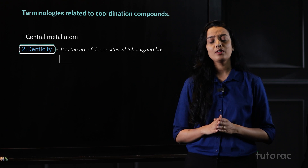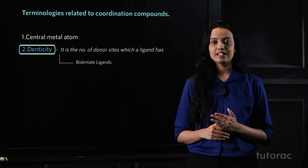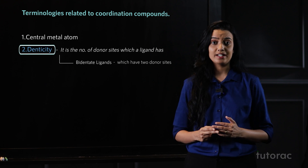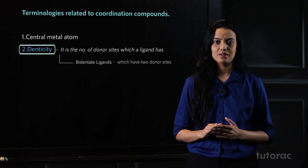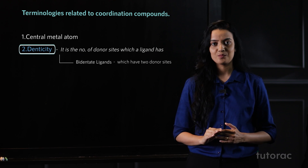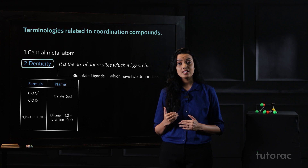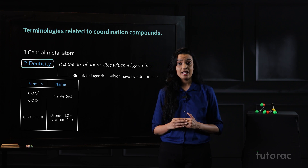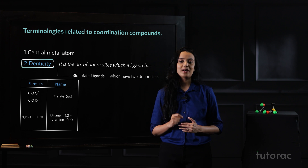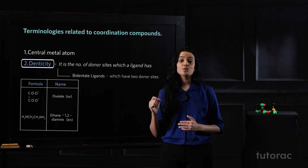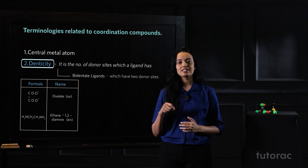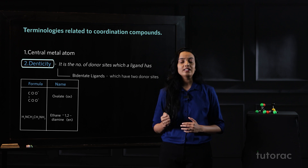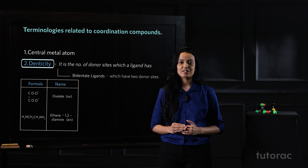When we talk about bidentate ligands, these have two donor sites. A ligand can be cationic, anionic, or neutral based on the charge present on it. In the table you can see bidentate ligands like oxalate (C2O4²⁻) and ethane-1,2-diamine, also known as ethylenediamine, represented as EN. All these are bidentate ligands.